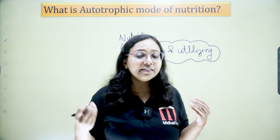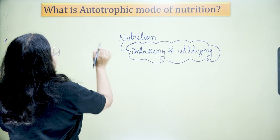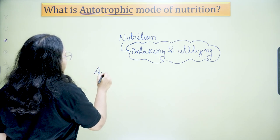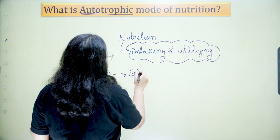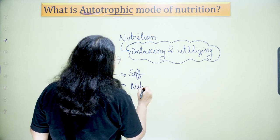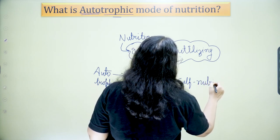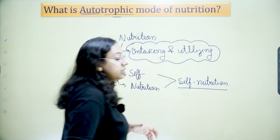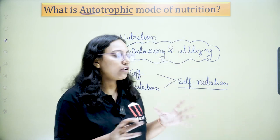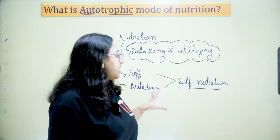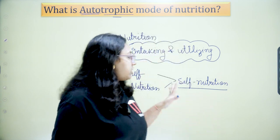Autotrophic mode of nutrition is generally done by plants — especially green plants. The word 'autotrophic' is made up of two words: 'auto' meaning self, and 'trophy' meaning nutrition. Combining these gives 'self-nutrition.' Self-nutrition means an organism is not dependent on any other organism for food — they are self-sufficient to make their own food.